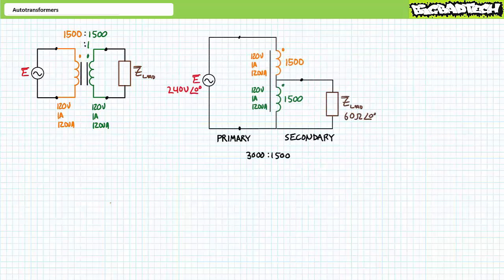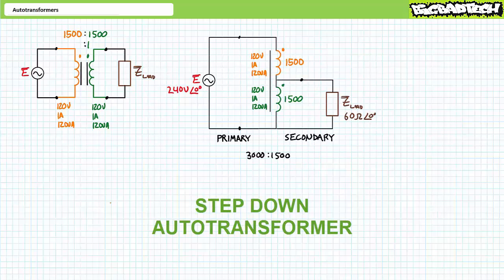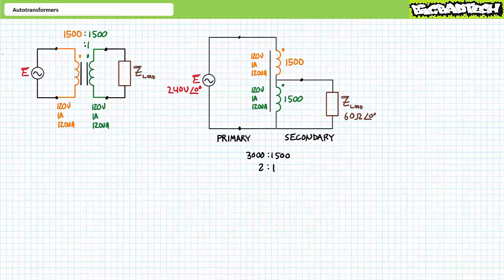If isolation isn't a necessity, consider the following modification. Configured as a step-down auto transformer, one would connect the previously isolated two windings in a series aiding fashion, allowing a total of 120 plus 120 or 240 volts to be applied across a single winding. Output is then taken across half the larger winding. The primary input winding becomes 1500 plus 1500 or 3000 turns, and the secondary output winding has 1500 turns, even though they're part of the same winding. We've in effect created a two-to-one step-down auto transformer, where 240 volt input results in 120 volt output.